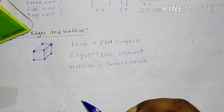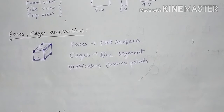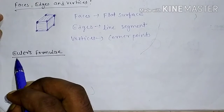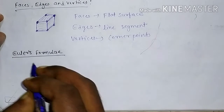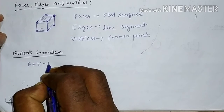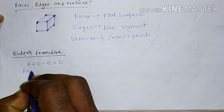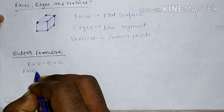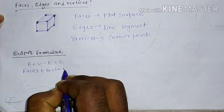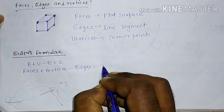The last topic is Euler's formula. Euler's formula is: F + V − E = 2, where F represents faces, V represents vertices, and E represents edges, and this equals 2.